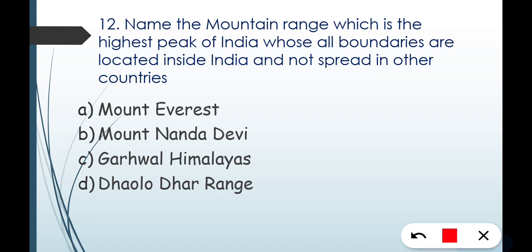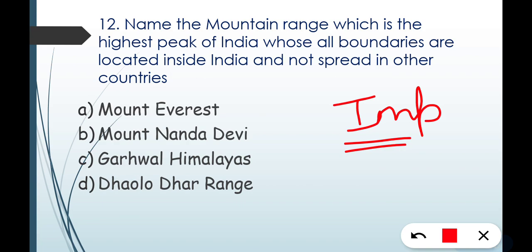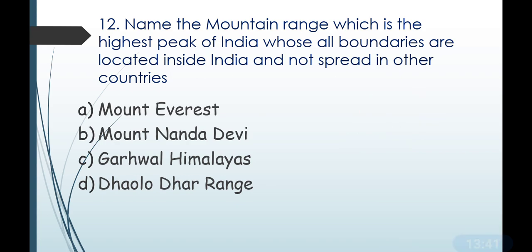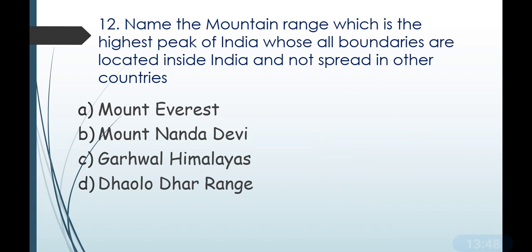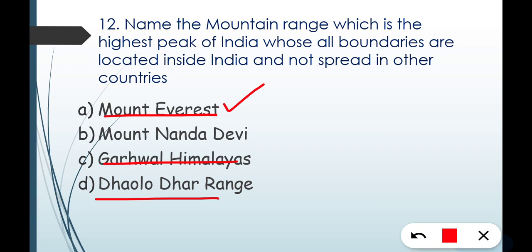Question number twelve: name the highest mountain peak of India whose all boundaries are located inside India and not spread to other countries. Mount Everest is eliminated as it shares the Nepal-China border. Mount Garwal Himalayas are partly China-occupied. The correct answer is Option B — Mount Nanda Devi, located in Uttarakhand.